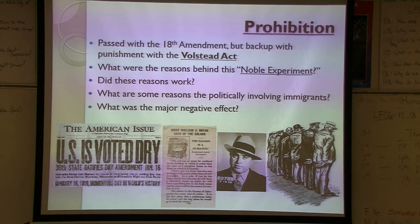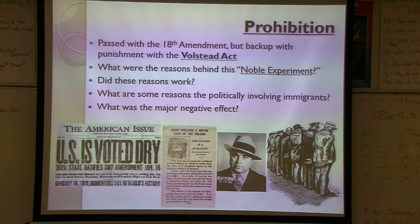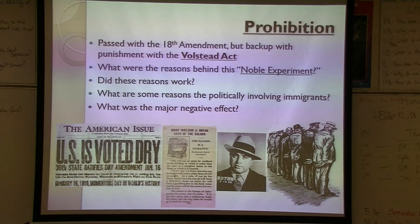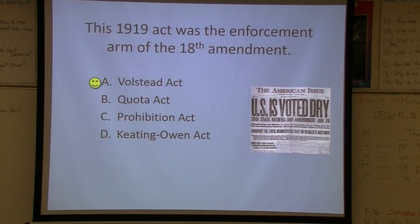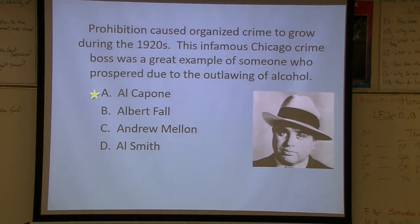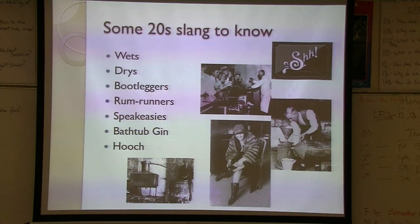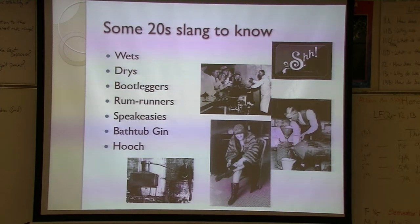This is where the noble experiment of prohibition ultimately failed. The negative effect was organized crime — when you make something illegal it becomes very profitable, and alcohol became extremely profitable. Al Capone is the best-known example, but remember organized crime was everywhere. Eventually the 21st Amendment repealed the 18th, partly to generate tax revenue during the Great Depression. Interestingly, less alcohol was consumed after the 21st Amendment than before the 18th, so many goals of prohibition were actually successful.